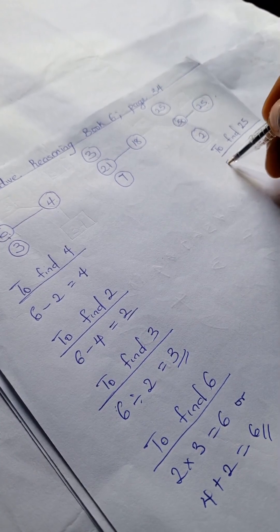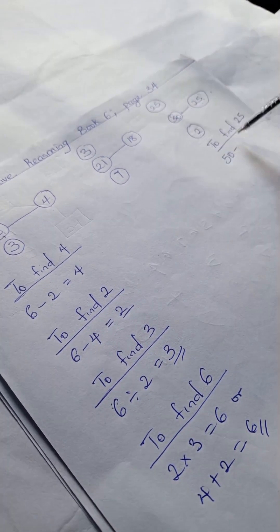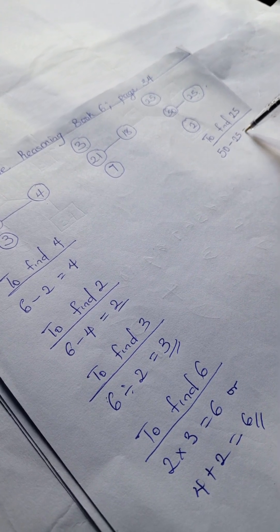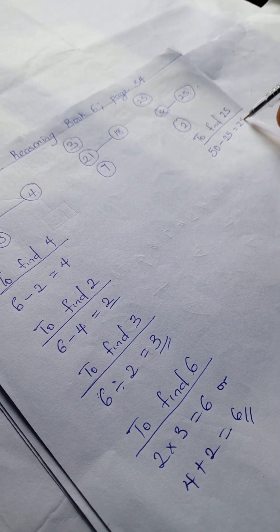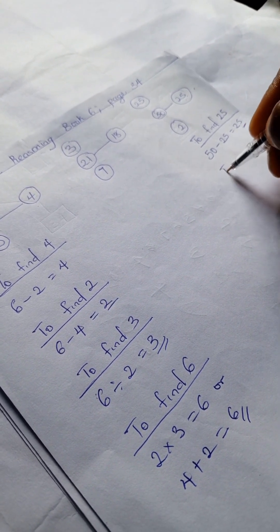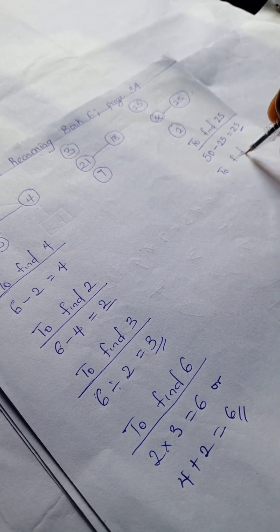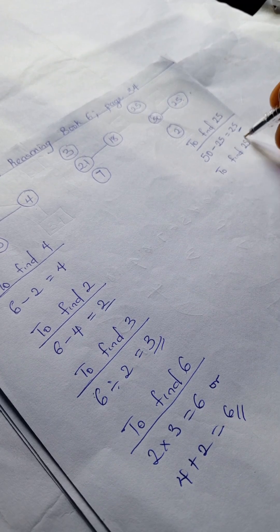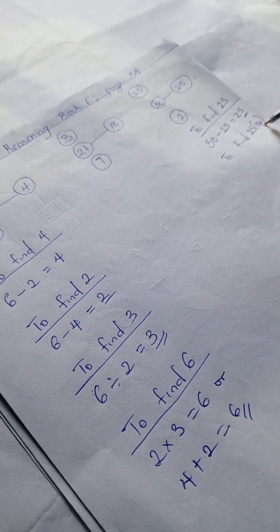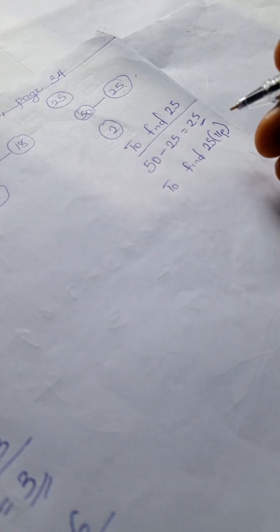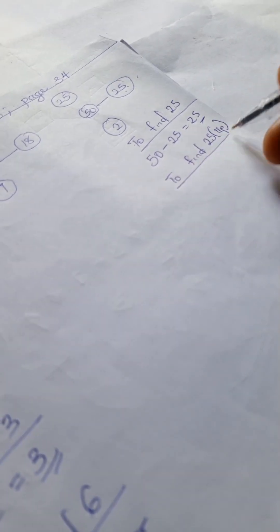That gives us 25 on the side. To find 25 up, let's just indicate: to find 25 up here, we have 50 minus 25.